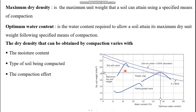The second factor is the type of soil being compacted. Silty sand and plastic clays usually have higher maximum dry density, whereas poorly graded sand and compressible soils have lower dry density. The third factor is compaction effort — the higher the compaction effort, the higher the dry density.